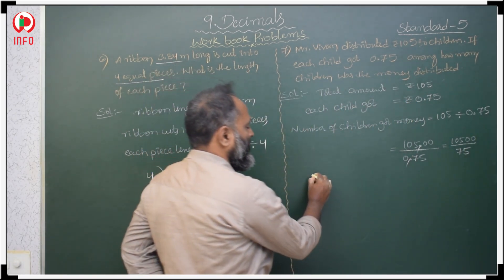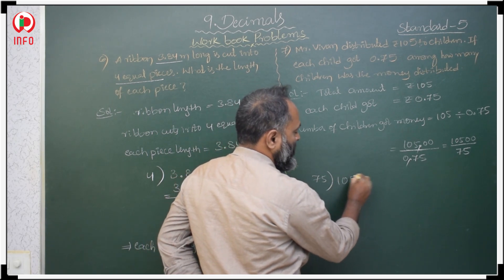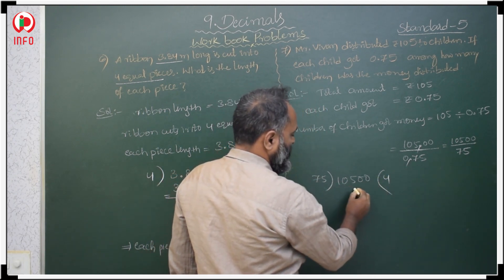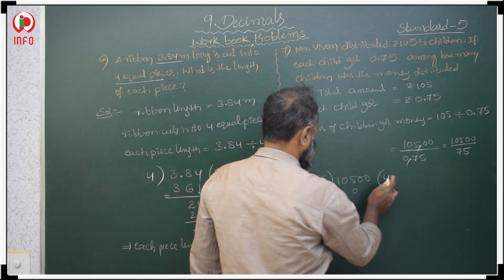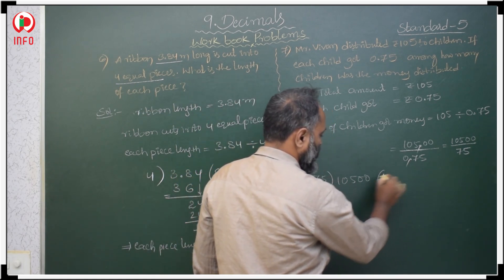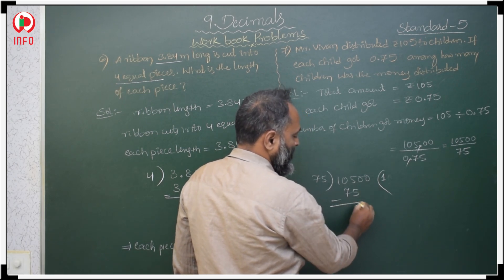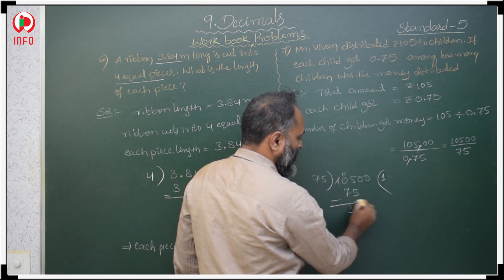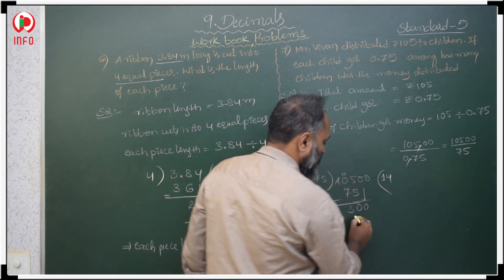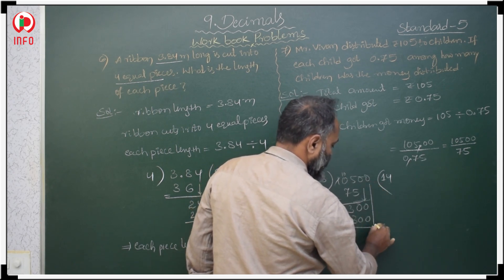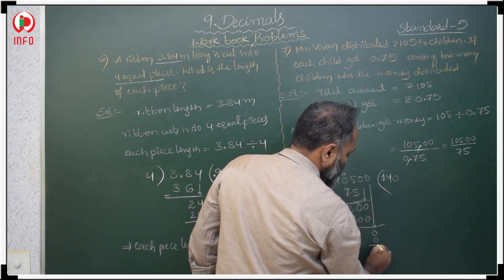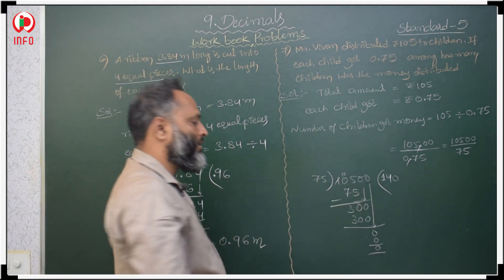Now divide 10,500 by 75. 75 ones are 75; subtract to get remainder, bring down zeros. 75 fours are 300; remainder is 0. So the answer is 140. 140 children received the money.